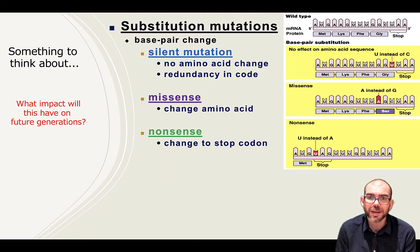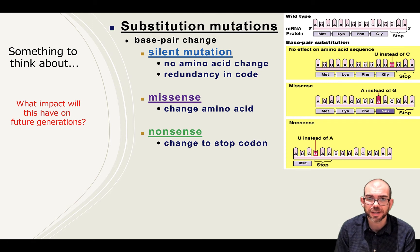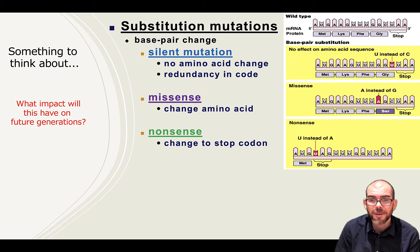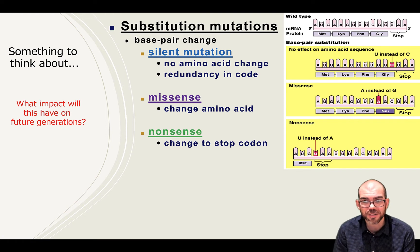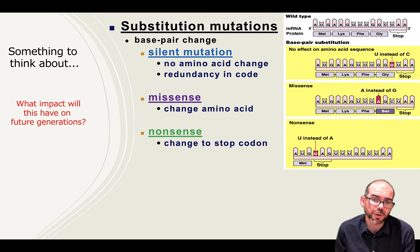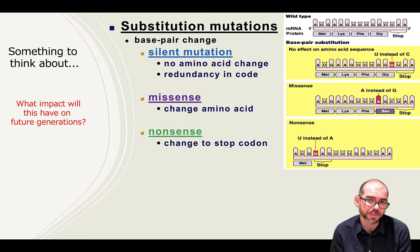So these are our three substitution mutations. We can have a silent mutation, where the change causes no change at all and the same amino acid is produced. We can have a missense mutation, where the change of one letter causes a different amino acid to be produced — that can have a dramatic effect or no effect at all. Or you can have a nonsense mutation, where a premature stop codon is made and translation itself ceases. Something to think about: if this occurs in an organism, what impact would this have on its future generations? And does it matter where in the organism the mutation occurs?